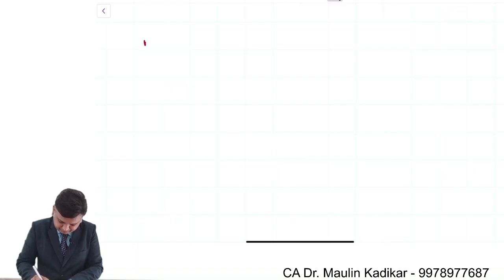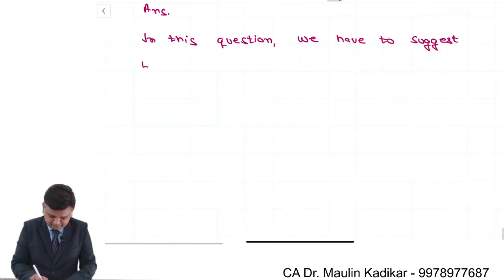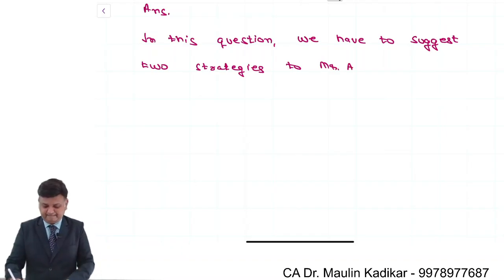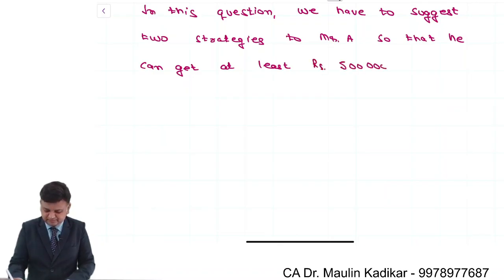Let us answer the question. In this question, we have to suggest two strategies to Mr. A so that he can get at least Rs. 5 lakhs after six months.